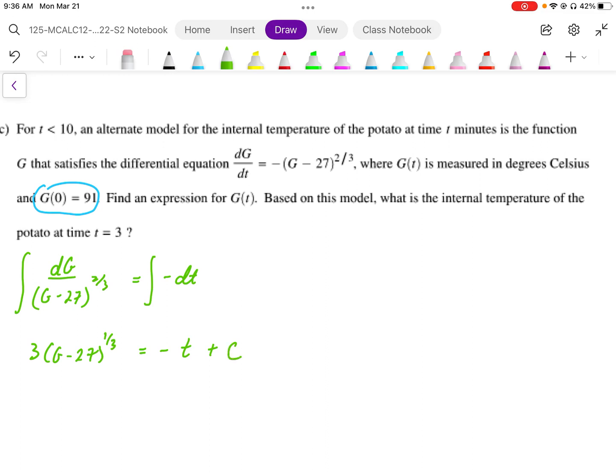We need to then solve for the plus C. And to solve for the plus C, what we're going to do is use that initial condition here of t equals 0, G(0) equals 91.